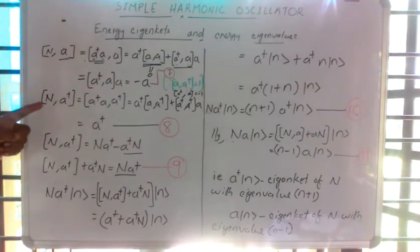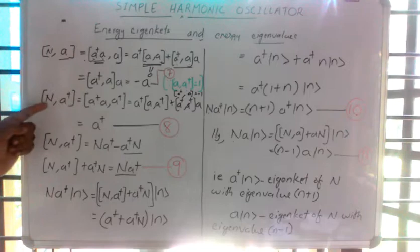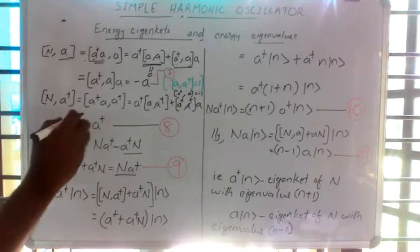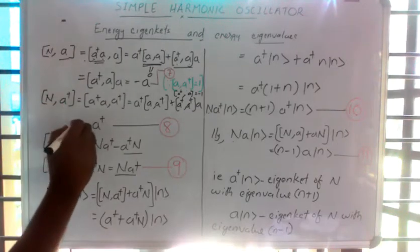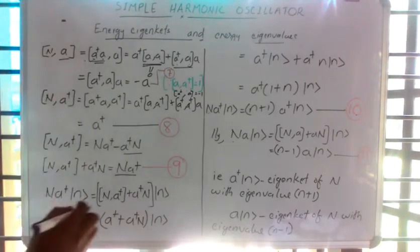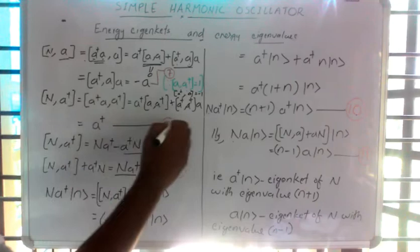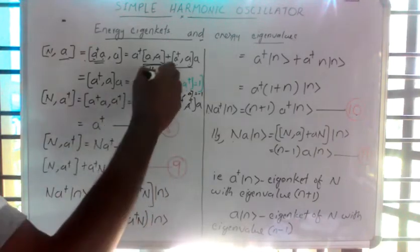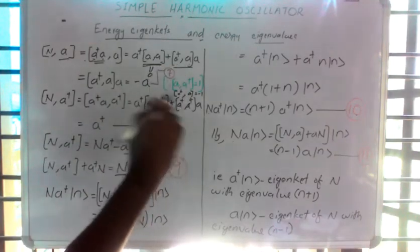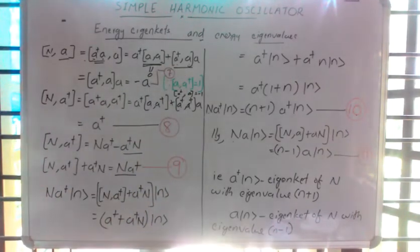Similarly, when we are finding the commutator of N and a dagger, we will get that is equal to a dagger. Let me put this as equation seven and equation eight.